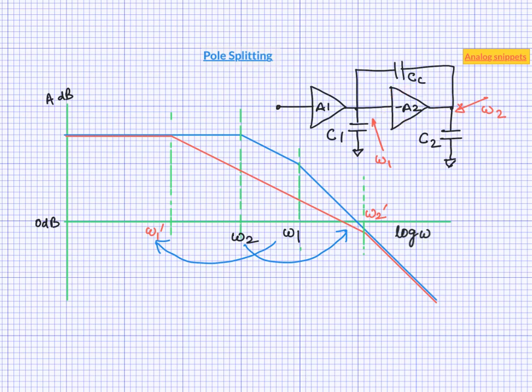But what if the compensation capacitor is very small? Would it mean that for a very small value of compensation capacitor, the pole splitting would happen in the reverse order initially? In reality, pole splitting does not work like that.